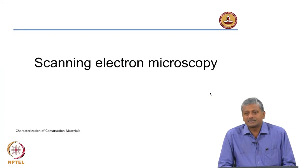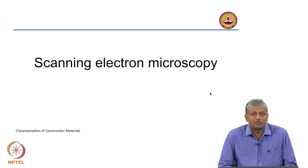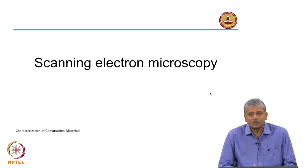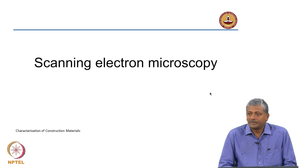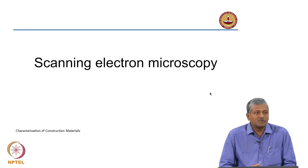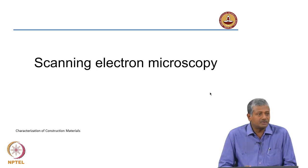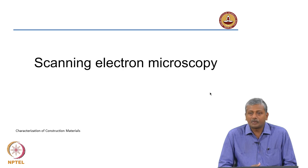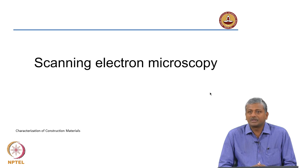Hello everybody. In the last couple of lectures we have been talking about the process of optical microscopy. We looked at different configurations of the microscope — reflected light imaging and transmitted light imaging. The purpose of the imaging is to look at the contrast between different phases present in the same material, with contrast generated by differential levels of absorption or reflectivity of the light.